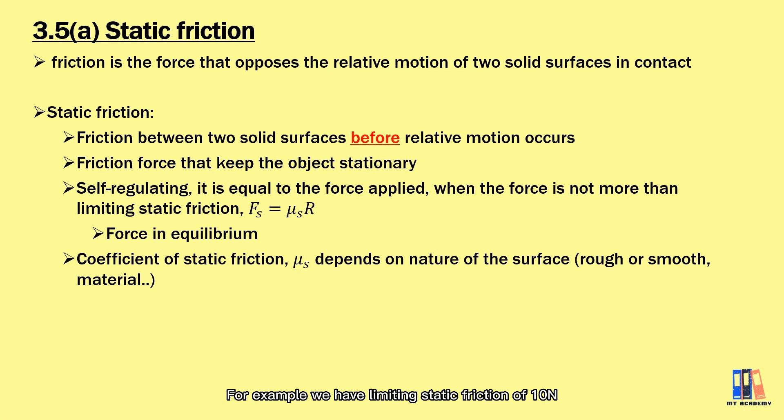For example, we have limiting static friction of 10 N. If we apply less than 10 N force, such as 5 N, the friction produced is also 5 N to keep the object stationary. Static friction is self-regulating, which means it can adjust the value according to the force applied, but with the condition that it does not exceed the limiting static friction.